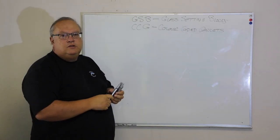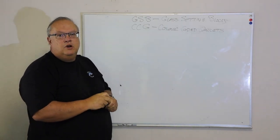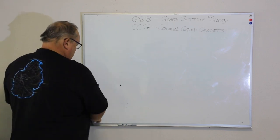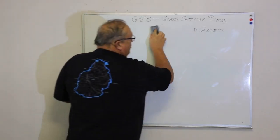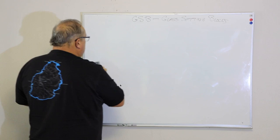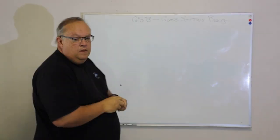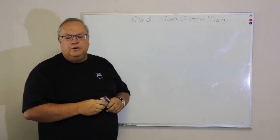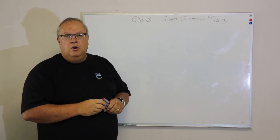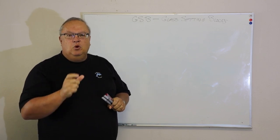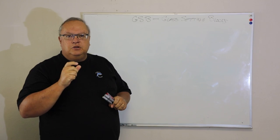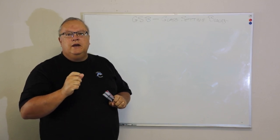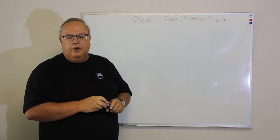Let's start talking about glass setting blocks. First of all, what is a glass setting block? Well, it's a small piece of plastic that is used during the glazing process on an aluminum window.